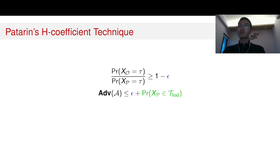Then the advantage of the adversary is actually bounded by this blue epsilon term and this green probability. In order to perform the proof using H-coefficient technique, we need to perform the following three steps.